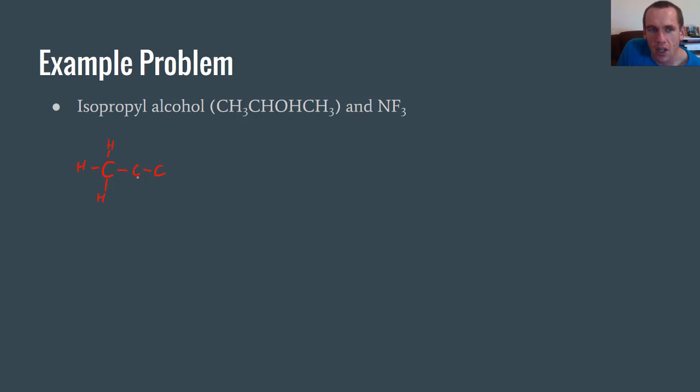Then I have the CHOH. I have this hydrogen that comes off of this and then I have an oxygen and then I have a hydrogen. This would have my two electron groups, my lone pairs there, and then I have CH3 again. This is the molecule isopropyl alcohol. That's commonly rubbing alcohol.